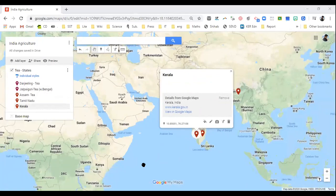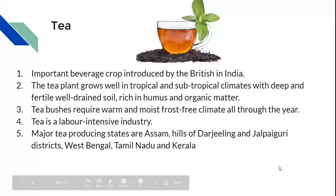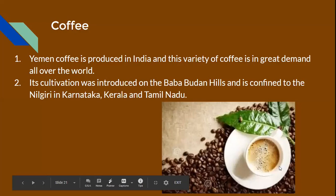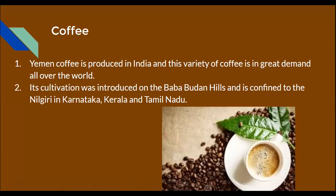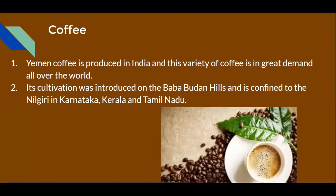Now let's talk about coffee. Coffee is another food crop other than grains cultivated in India. Yemen variety of coffee is produced in India and is in great demand all over the world. Its cultivation was introduced on the Baba Budan Hills and is confined to the Nilgiris in Karnataka, Kerala, and Tamil Nadu — these are the major places where coffee is cultivated.